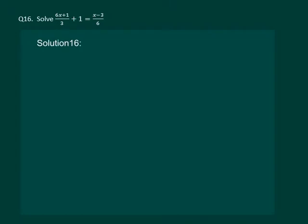Let us read the question. Solve 6x plus 1 whole by 3 plus 1 equal to x minus 3 whole by 6.